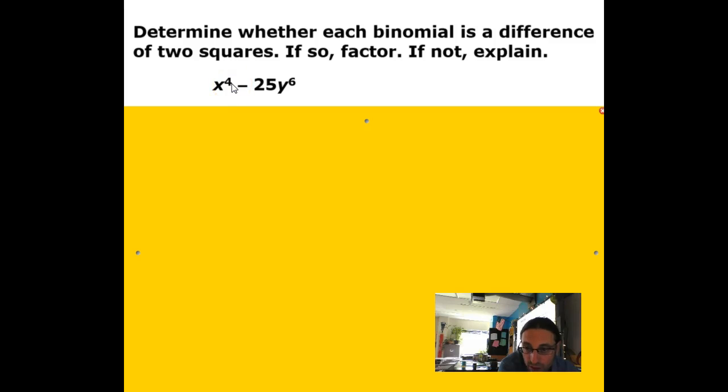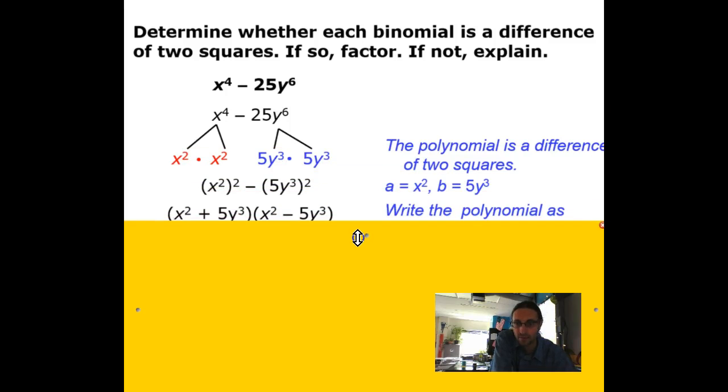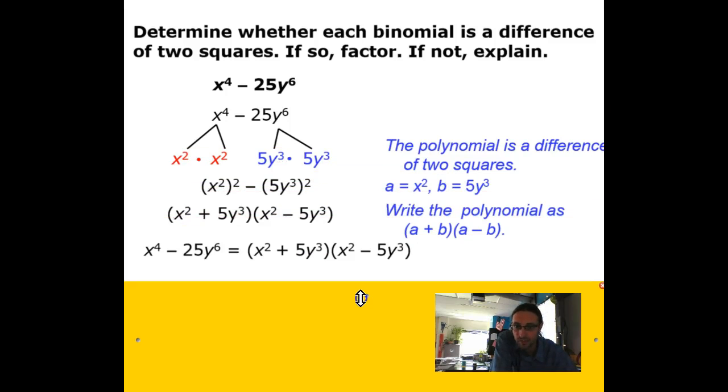If I try another problem here, x to the fourth, okay, that's x to an even power, and I've got minus, that's good, and 25y to the sixth, but wait a minute, that's just five. The square root of 25y to the sixth is just 5y to the third. Wait a minute, I totally can do that. And yeah, if you look at the example here, you see the difference of these two squares are these two terms: x squared plus 5y to the third times x squared minus 5y to the third. And so yeah, that's true, and that's how you play this game.